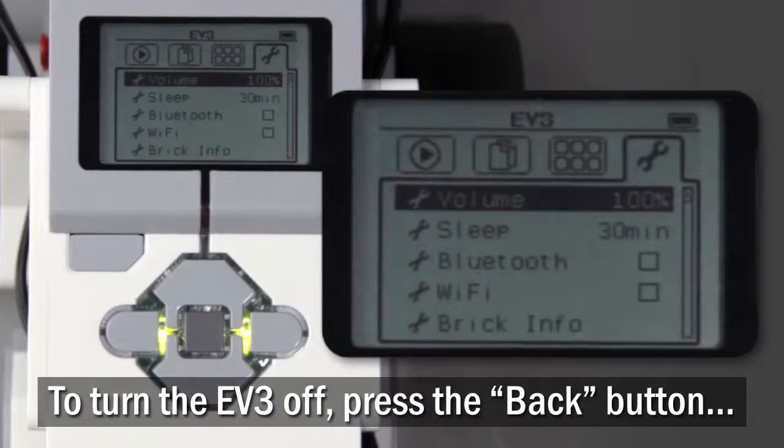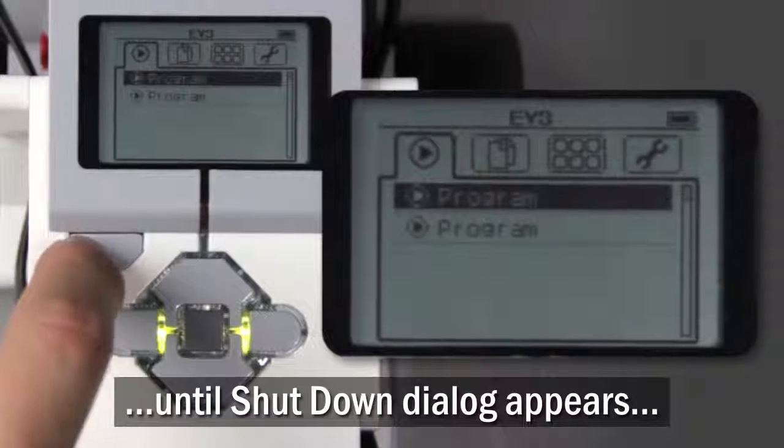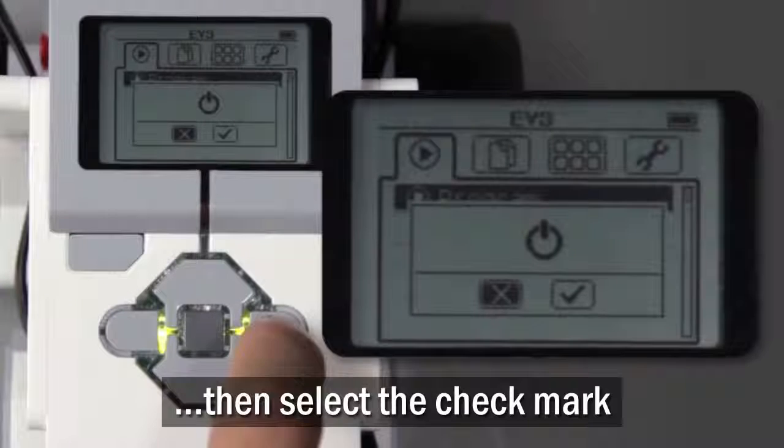To turn the Brick off, just press the Back button until the shutdown dialog appears, then select check mark.